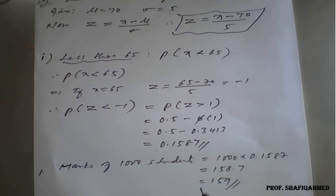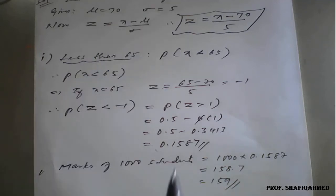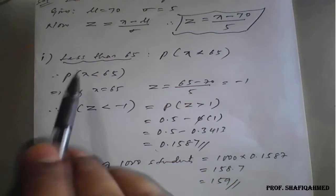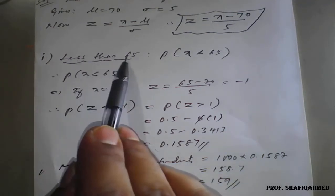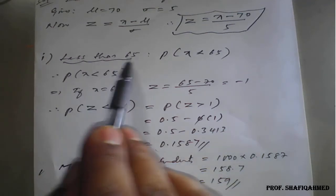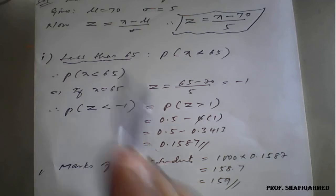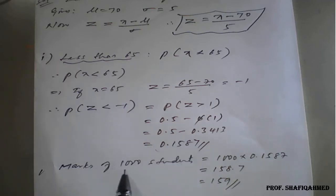Five means 65 — less than 65 marks scored by the student is 1 upon 159, so out of 1000 students, score less than 65 is 159. We multiply whatever result we get with 1000 to get the count.